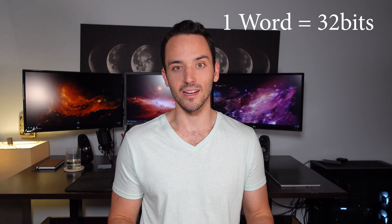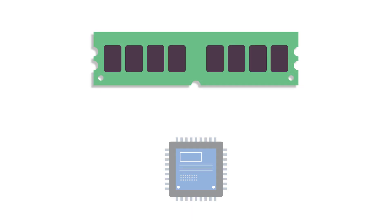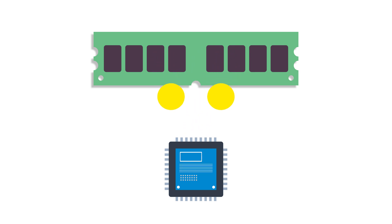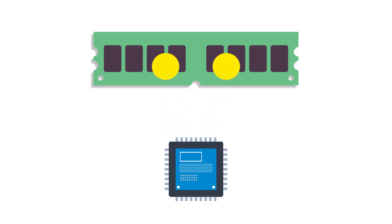DDR also runs at a slightly lower voltage — from 3.3 volts on SDR down to 2.5 volts on DDR, due to some changes on the interface arrangements of the chip. One of the biggest things DDR introduced is something called a prefetch, which tells us how many words of data the memory can fetch at a time. A word is just a term used for 32 bits of data. With SDR only one word was ever fetched, but with DDR prefetching allowed multiple words to be fetched per cycle, preparing the data to all be sent before the next cycle.